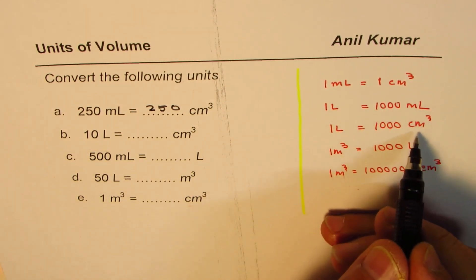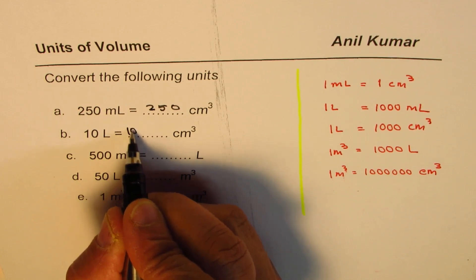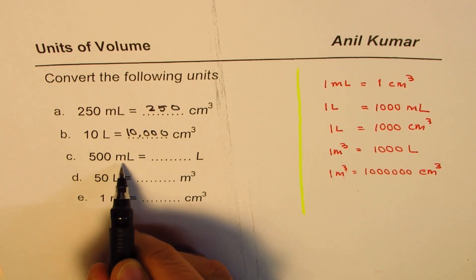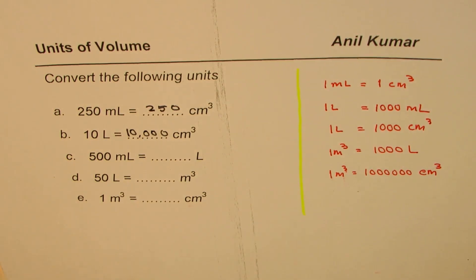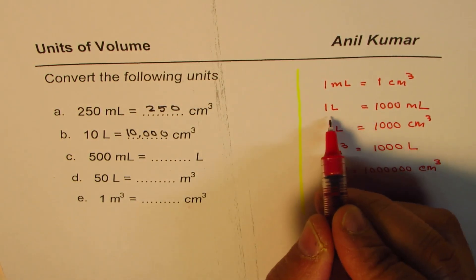So 10 will be 10,000, right? So it'll be 10,000. 500 milliliter, now one milliliter, okay, so let me write down here.